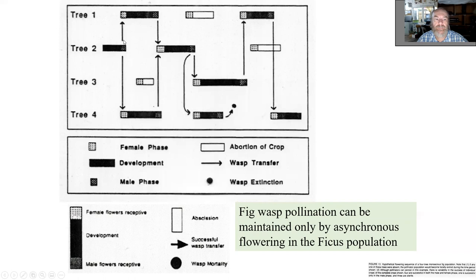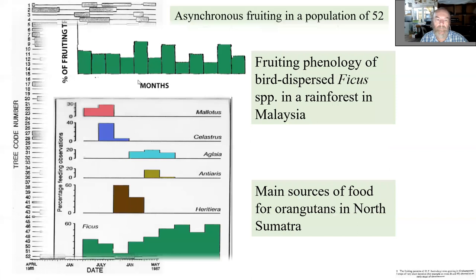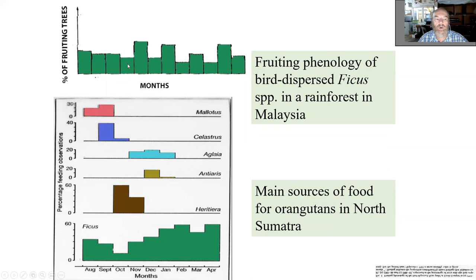This practical example shows 52 individual trees of ficus burdeivi and when they are flowering during one year. When you draw a vertical line anywhere, you will always find some flowering individuals. This is the production of figs for frugivores, as opposed to other fruit species favored by orangutans in Sumatra. This explains why for many frugivores, figs are really a keystone resource.